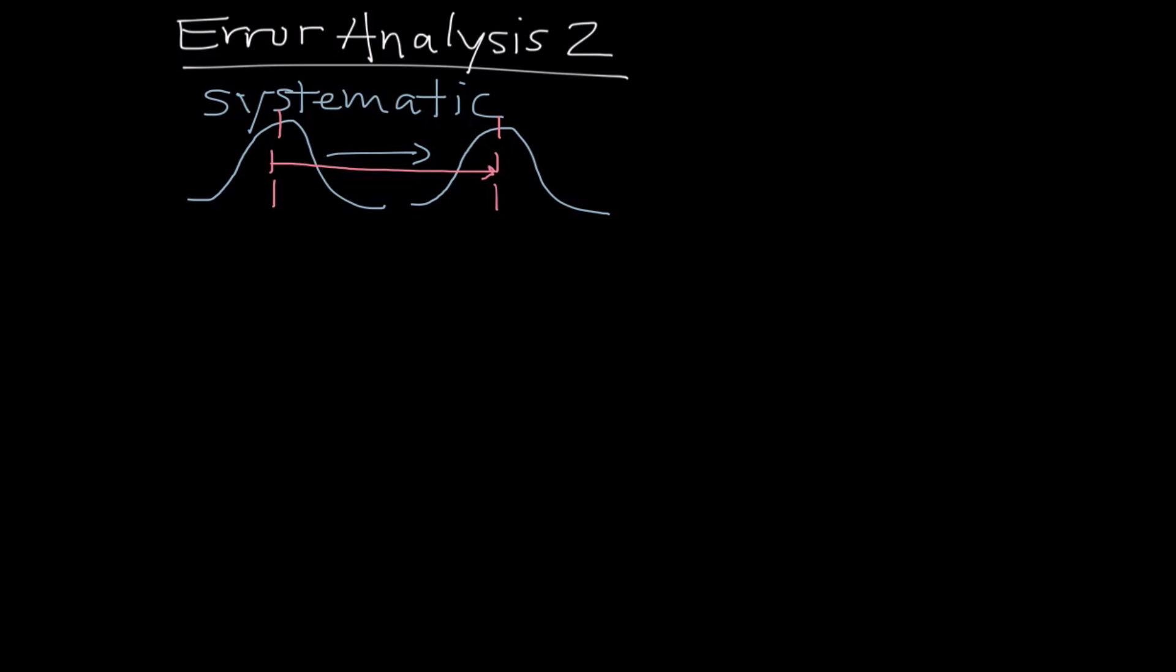Something to notice here that's really important is that the precision is unaffected so the width of the distribution, at least the way I've tried to draw it here, is unaffected by the presence of systematic error. So you can imagine that all of the data points are affected systematically, that's how I tend to remember systematic error.